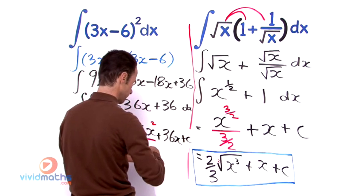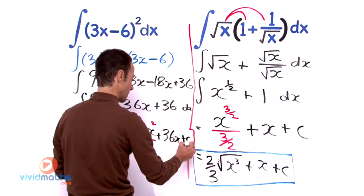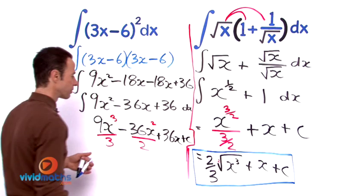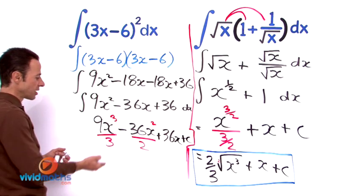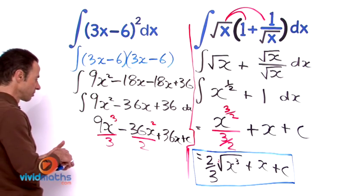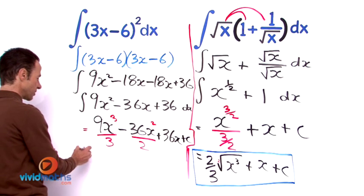Now we just simplify the numbers. So that is going to give us, 9 divided by 3.